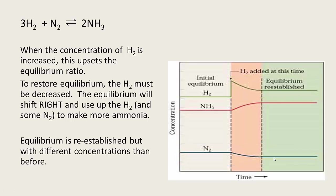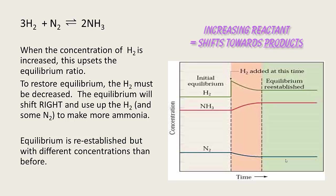When the equilibrium is re-established, the concentrations of the gases are different than before, as seen in the different levels of the lines. But the ratio of these concentrations — in other words, the value of the equilibrium constant — will be the same as before. Equilibrium has been restored. In summary, increasing the concentration of a reactant pushes the equilibrium towards the products.